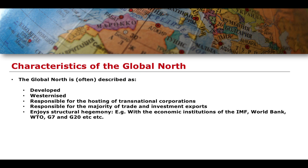There is also the idea that the global North enjoys structural hegemony — they wield a significant degree of power and influence within the international community. Within global governance, this includes not only the establishment but also strong claims in economic institutions like the International Monetary Fund, the World Bank, the World Trade Organization, and the G7, which is mainly made up of global North countries, as well as the G20. As a result, there is this structural hegemony that exists among members of the global North.